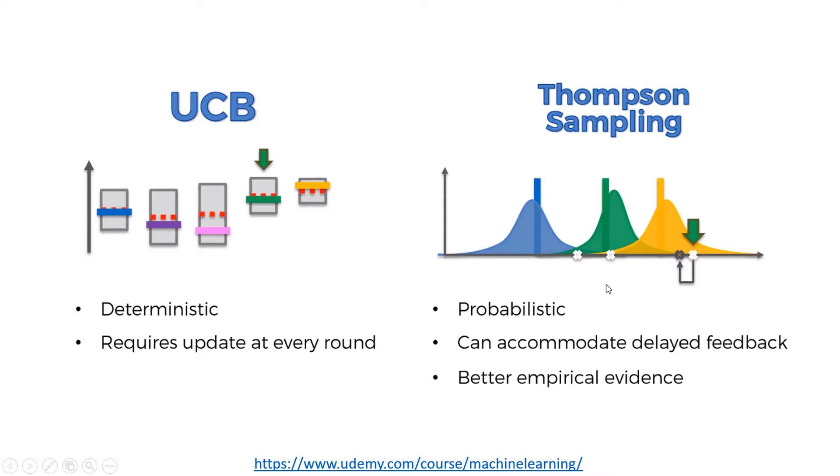The first difference is that UCB is deterministic while Thompson Sampling is probabilistic. This means every time you run UCB you'll get the same result, but every time you run Thompson Sampling, even using the same dataset, you'll get different results because it's a probabilistic algorithm.